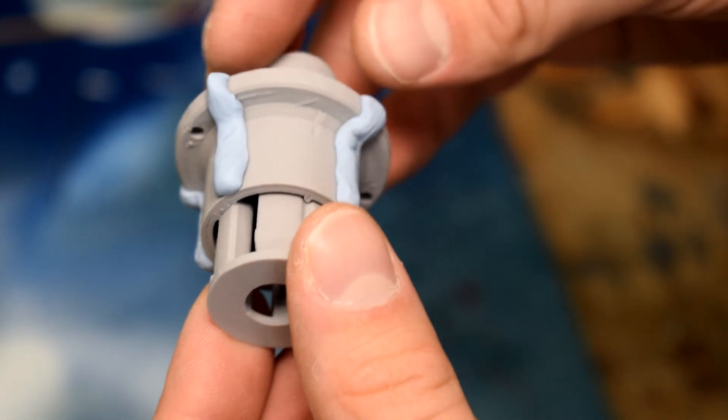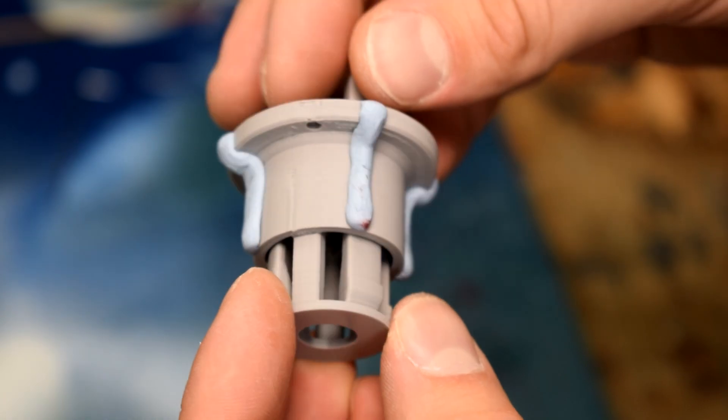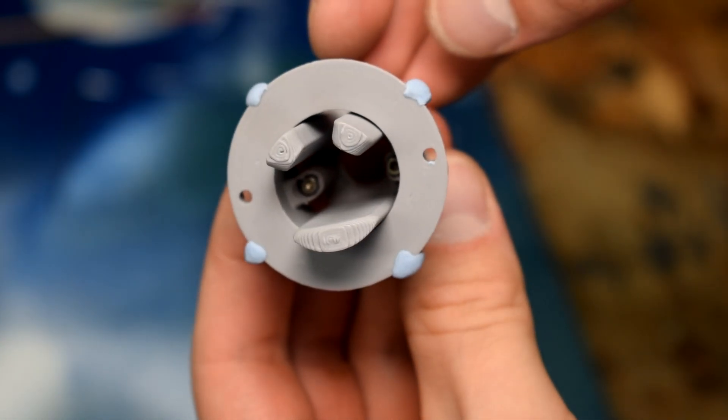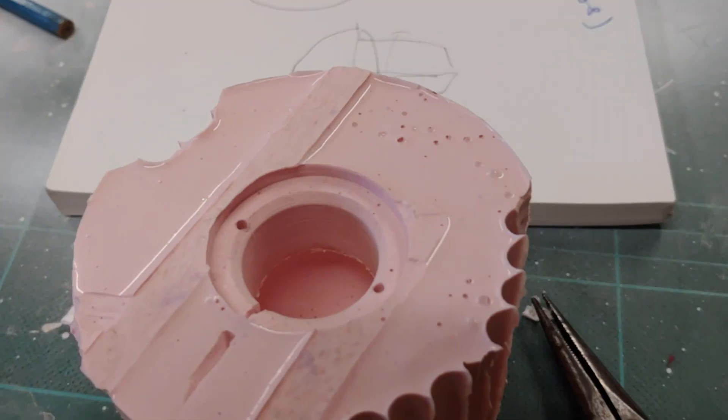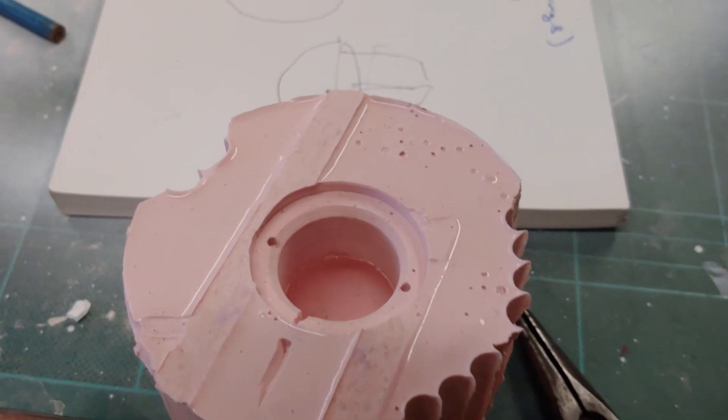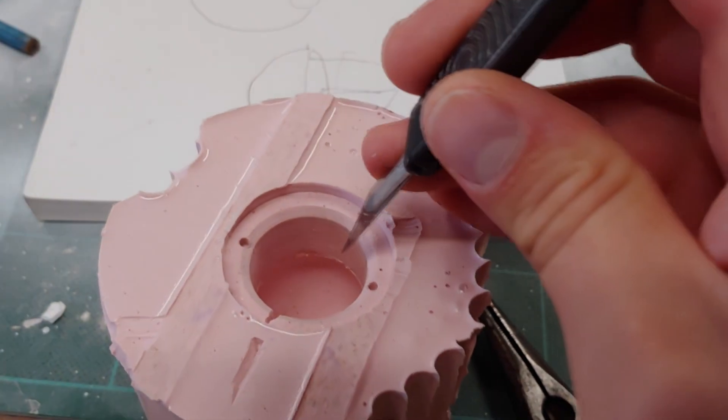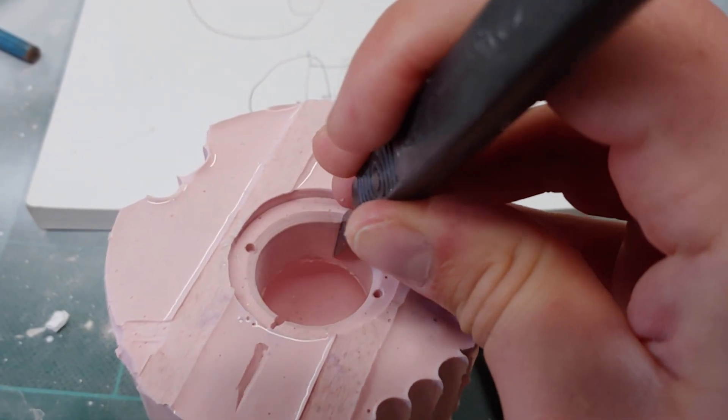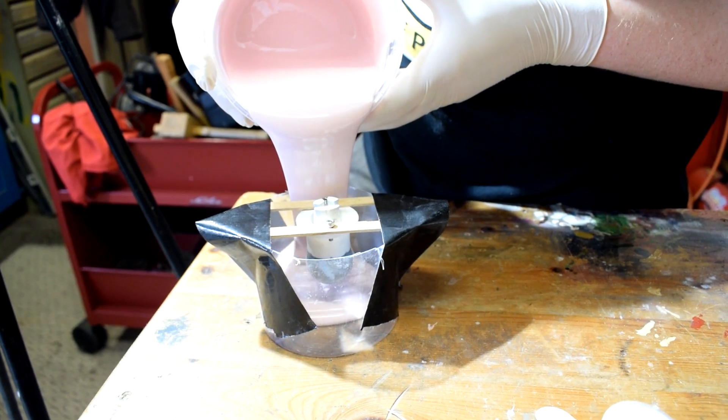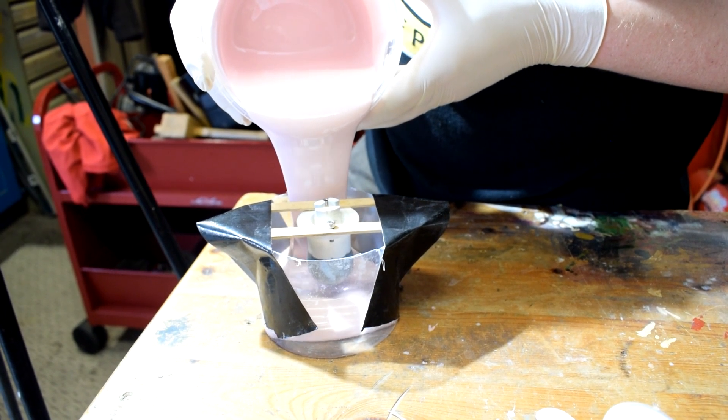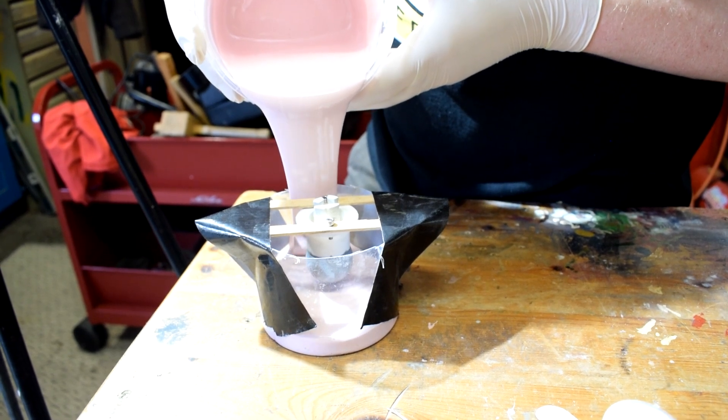You'll also need to make some channels with some Blu Tack or plasticine just as a way for the resin to be able to escape later on. I actually overlooked needing these channels so with mine I had to cut it out with a Stanley knife. If you have to do that that's fine, but it'll look a lot nicer and probably be more effective if you're able to make some nice channels with Blu Tack.